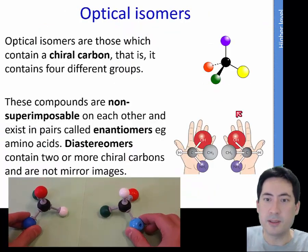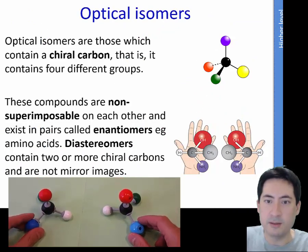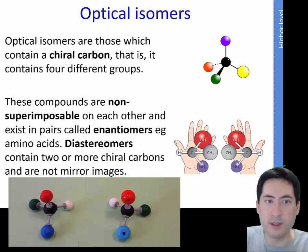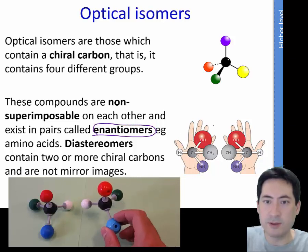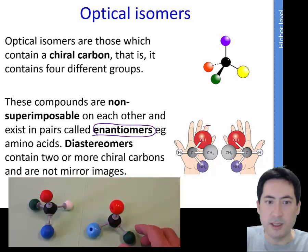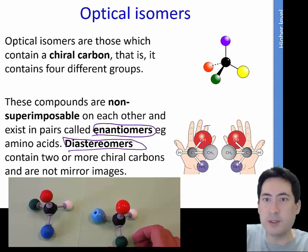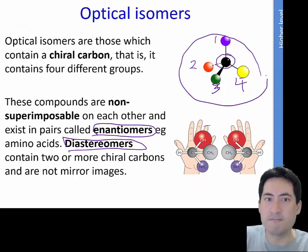Moving on to optical isomers — this is like your left and right hand. They look the same but cannot be superimposed on each other, so we call them enantiomers. If you have a very large molecule with two or more of these chiral centers, you call them diastereomers. They are non-superimposable. You find the chiral carbon by checking that all four groups attached to it are different — then you know you've got an optical isomer.